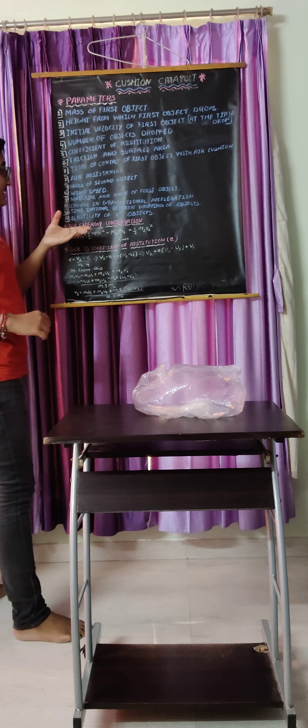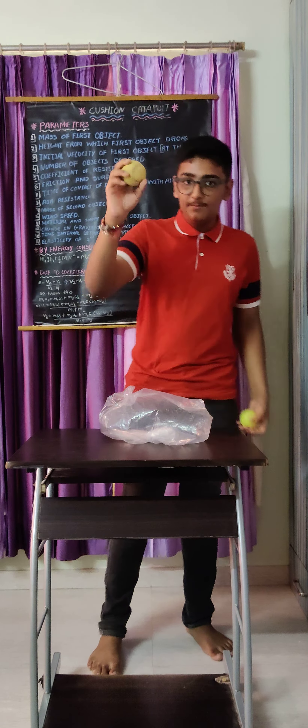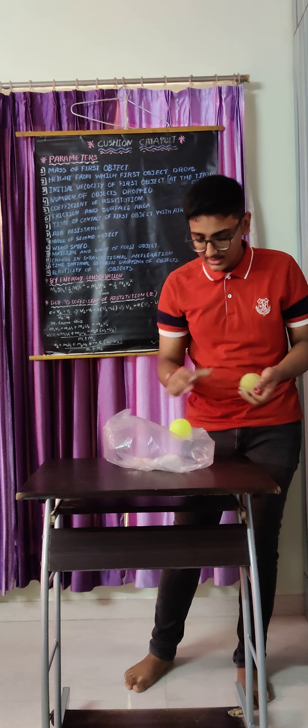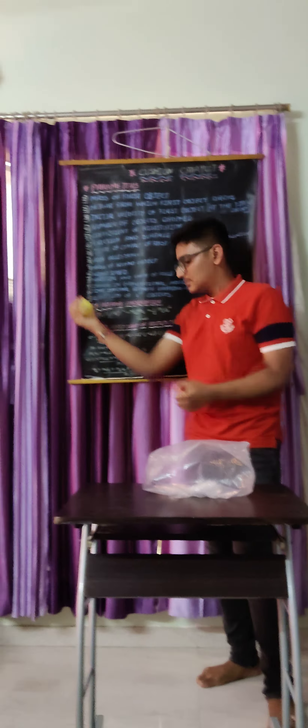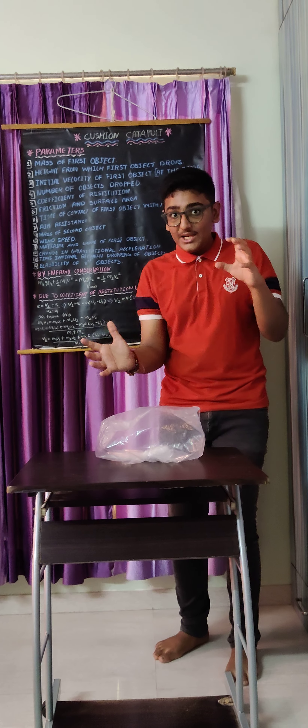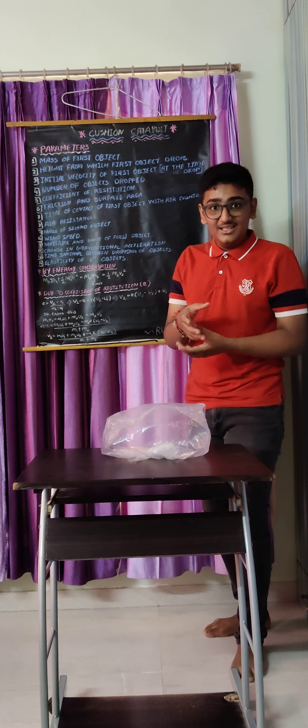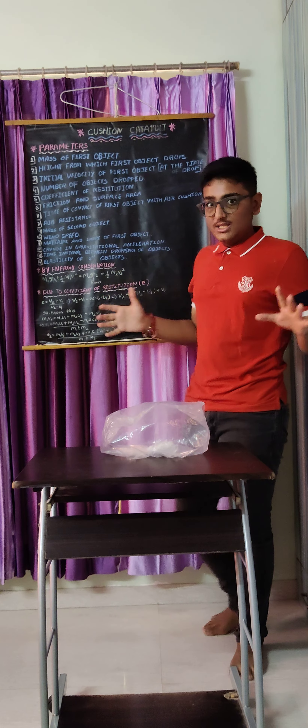Now I will explain the elasticity of the second object. I will take the second object as a sharpener, then this ball which is much more elastic, then this one which is too rigid, and then this one which is somewhat elastic. We can see that if the elasticity of the object is more, it will gain less height than a rigid object because energy is lost in the deformation of that object, decreasing exit velocity. If it is rigid, there is no deformation, so deformation energy is not lost and exit velocity is more.